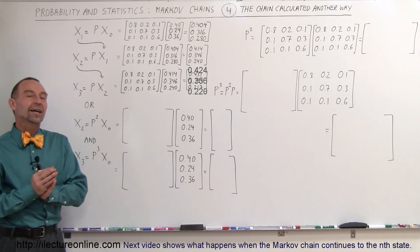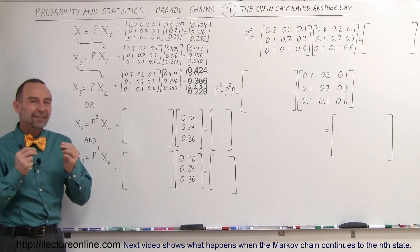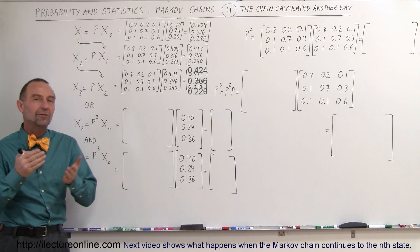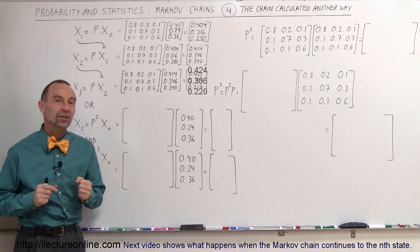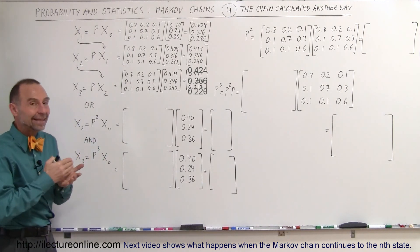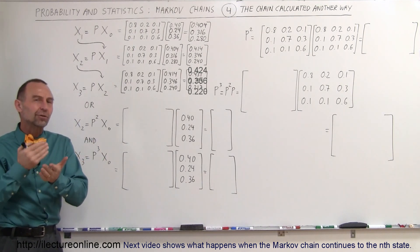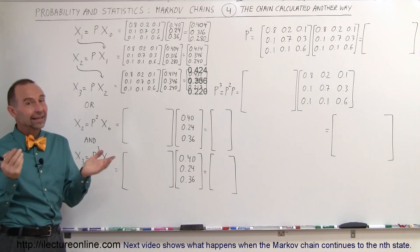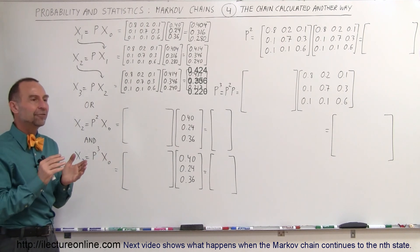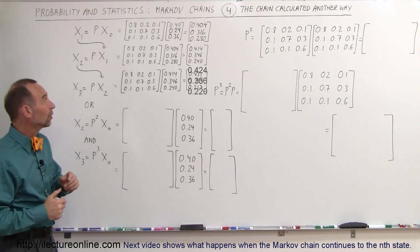Welcome to Electron Online. In this video we're going to show you a different way to get the results of Markov chains — in other words, how we can get the second state, the third state, or the fourth state, given the initial state and given the probability matrix.